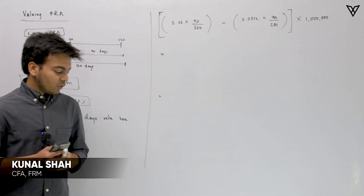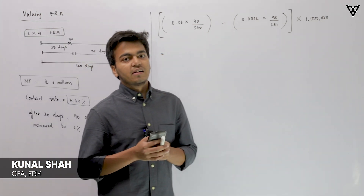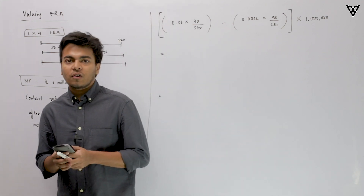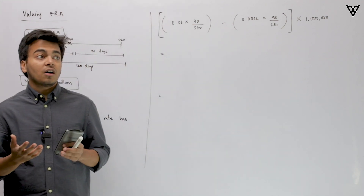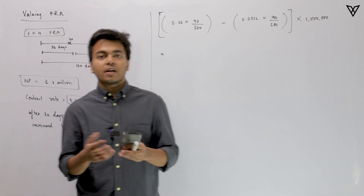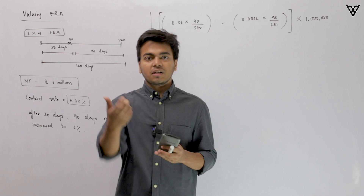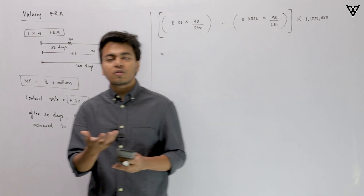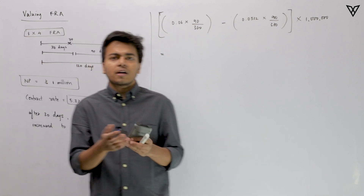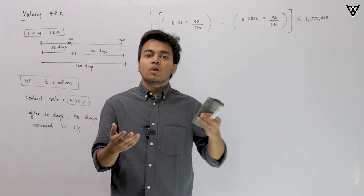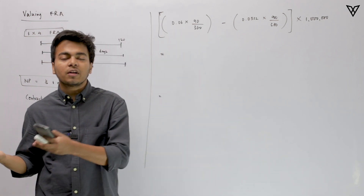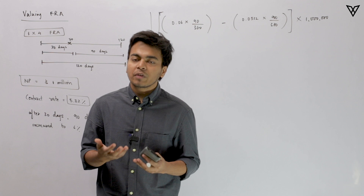In this video we are going to understand how exactly to value an FRA contract. When we talk about valuing an FRA contract, we need to calculate the profit or loss for whichever party is the long FRA or the short FRA. This is a linear contract, meaning whatever the long party gains the short party loses, and vice versa.